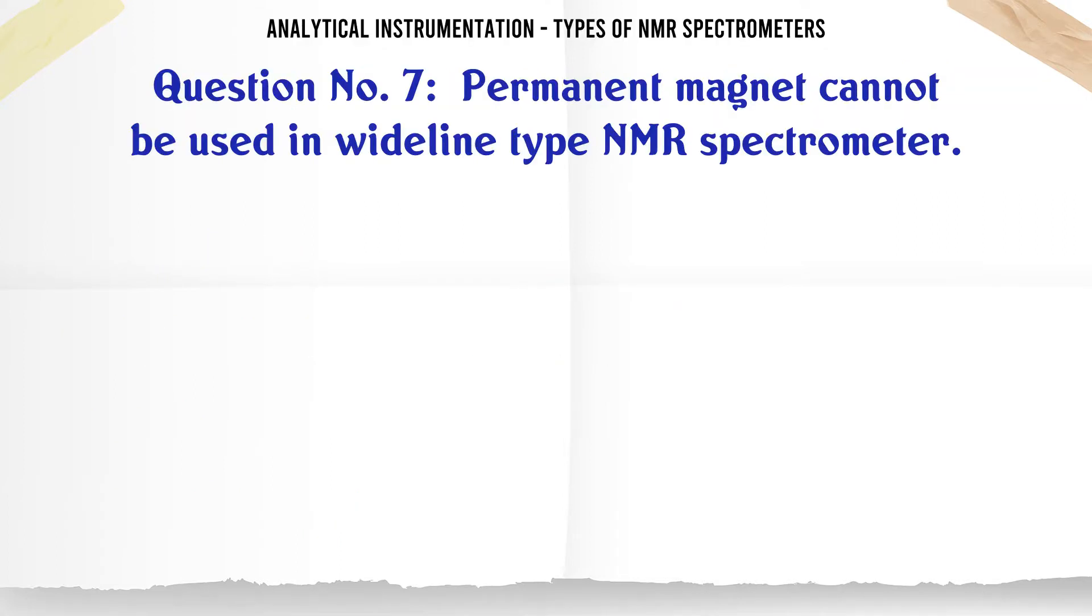Permanent magnet cannot be used in wide line type NMR spectrometer. A. True. B. False. The correct answer is False.